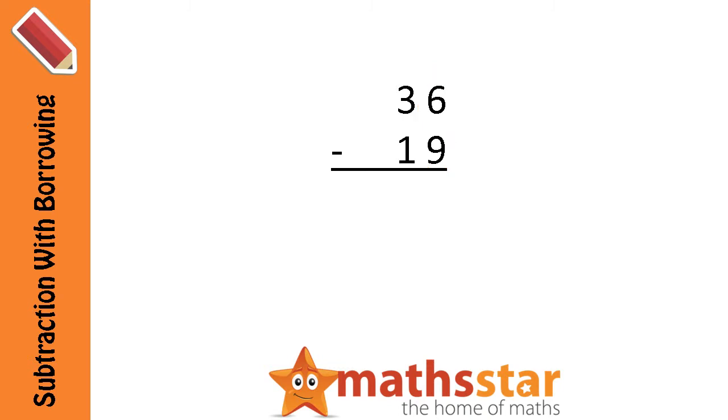So we are going to borrow from number 6's next door neighbor, which is the 3. Because we are going to borrow 1 from the 3, we need to cross it out and replace it with a 2.